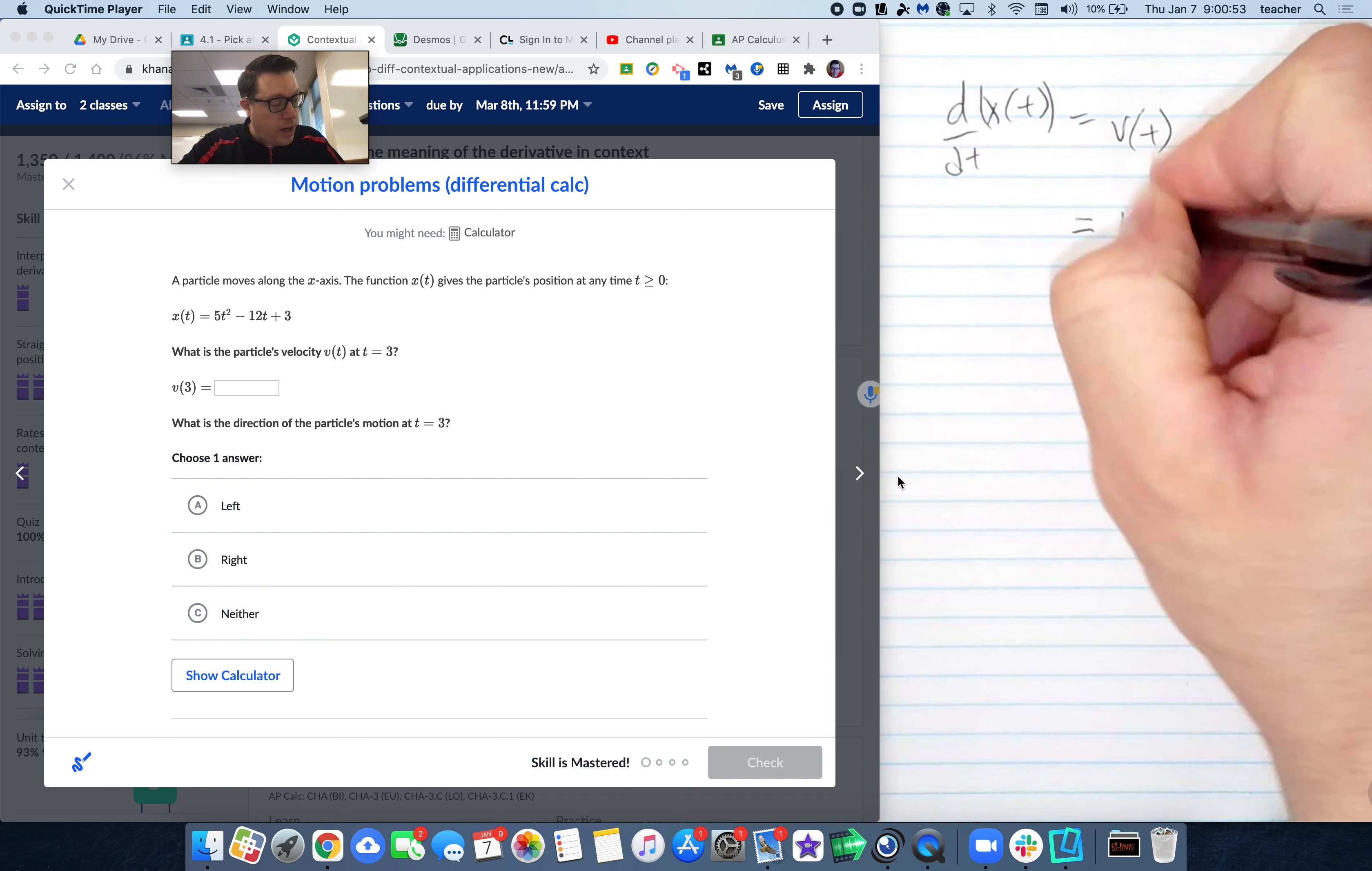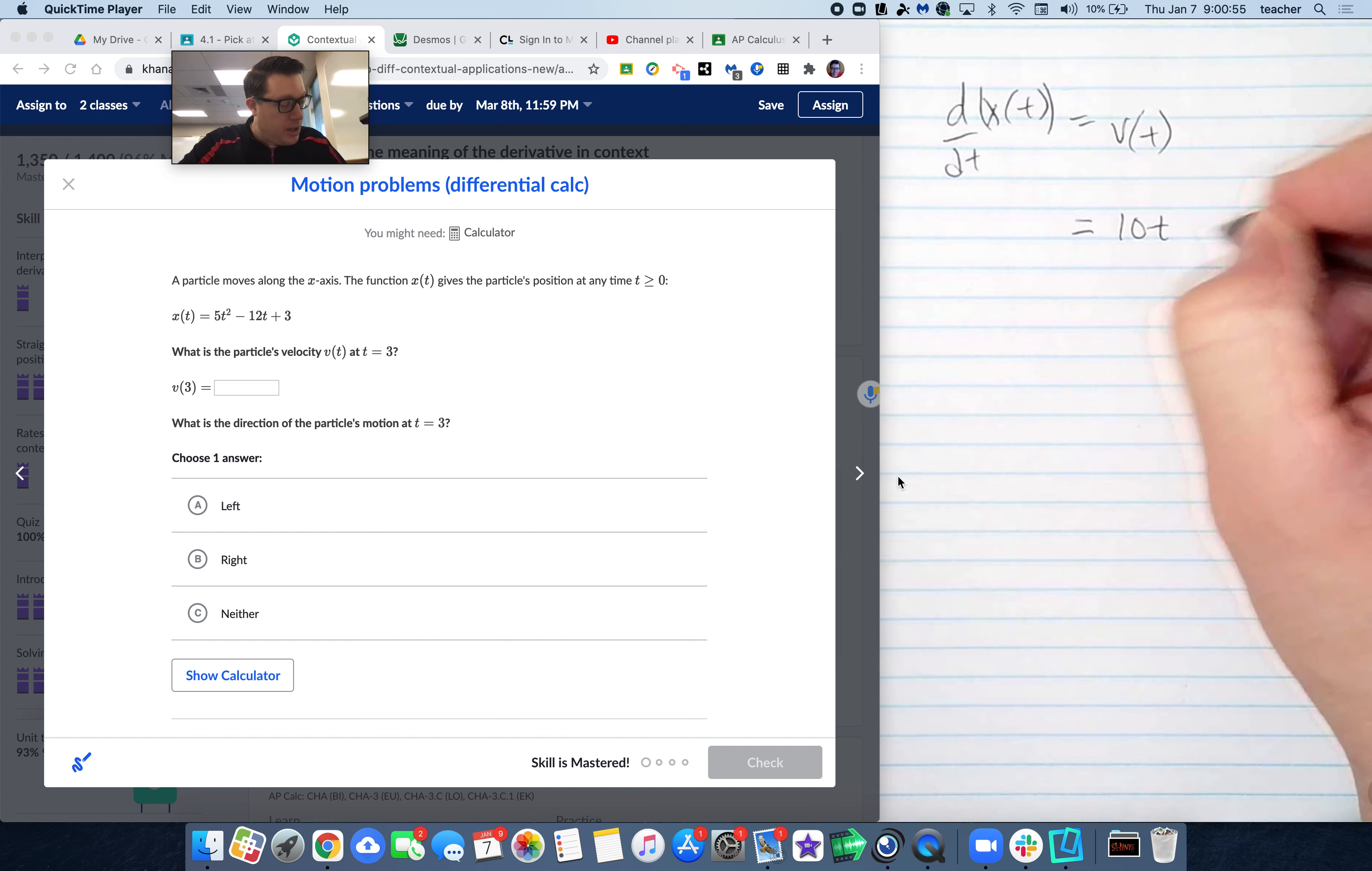The derivative of 5t squared makes 10t. The term minus 12t has a derivative of minus 12, and then the derivative of 3 is 0.